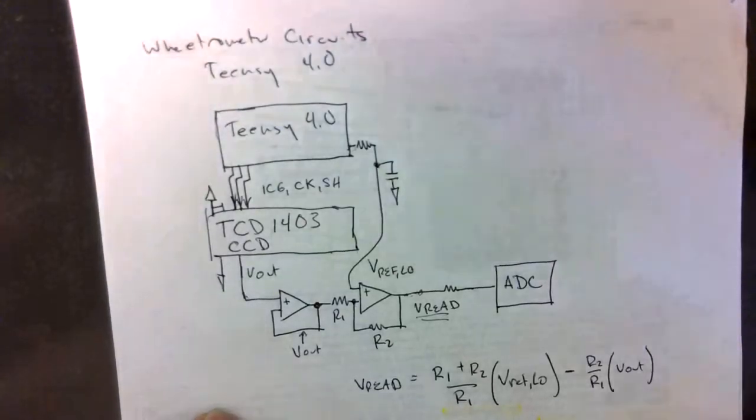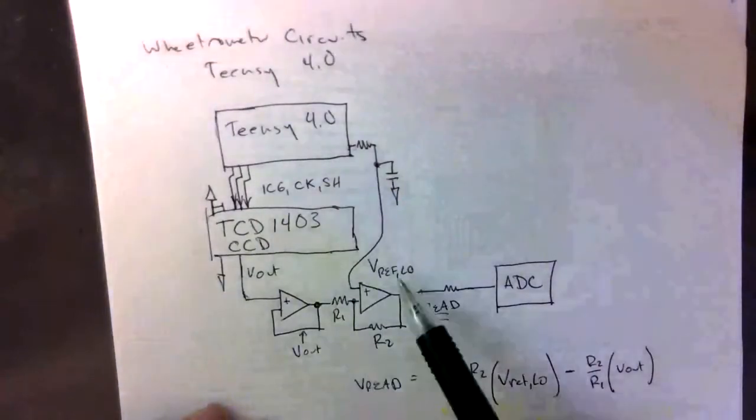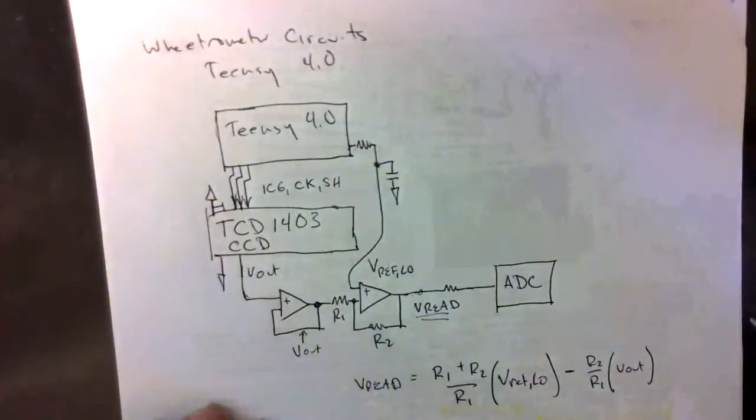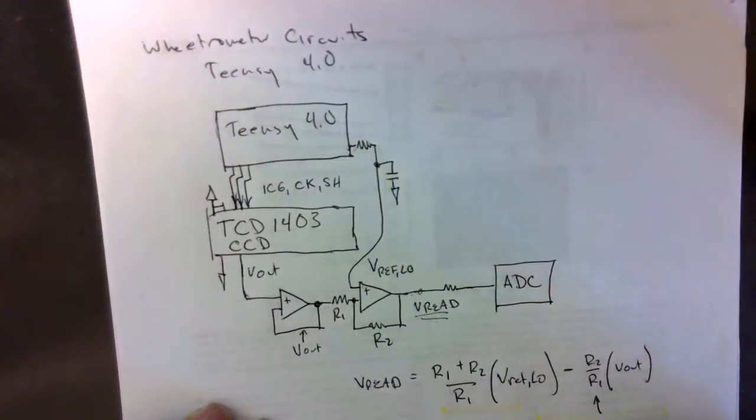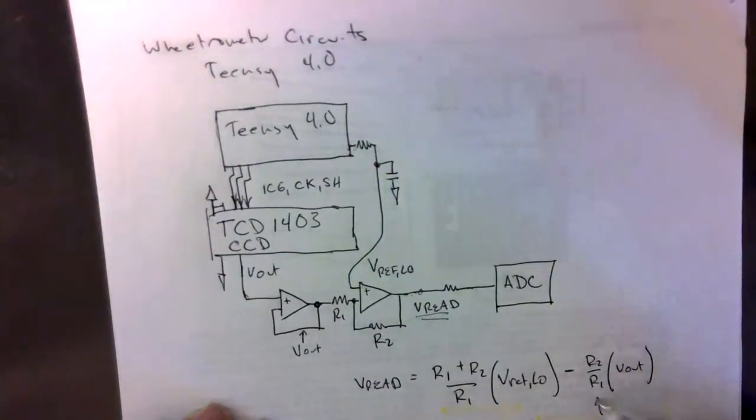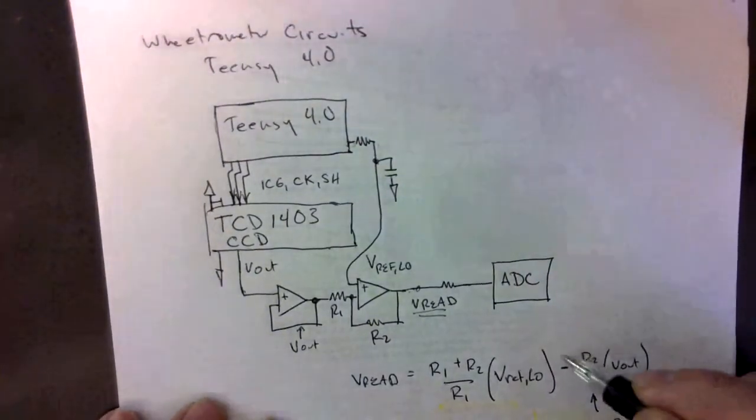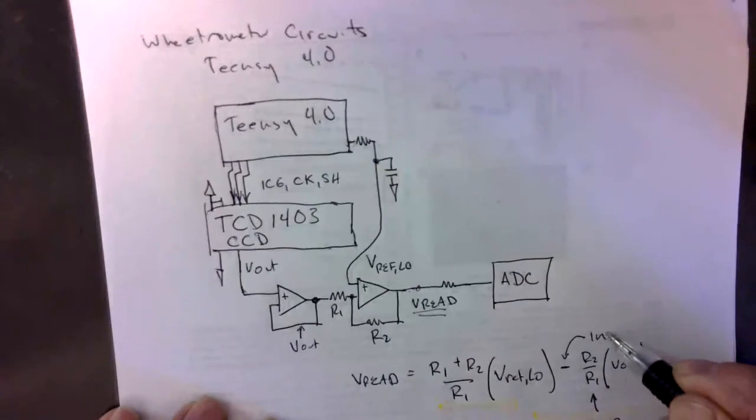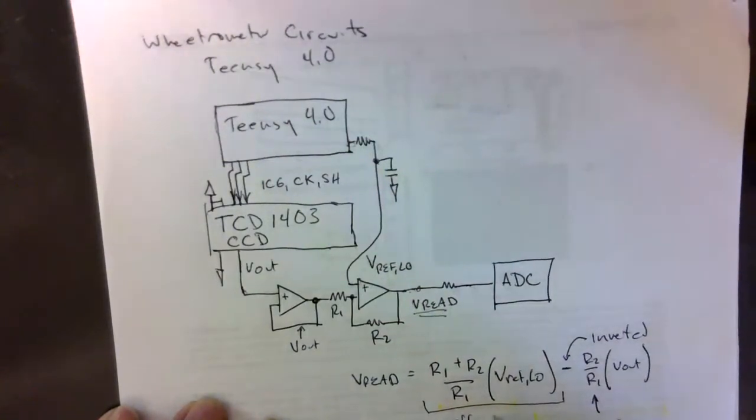That is a result of this feedback loop here. We have, first of all, an amplification constant. So the output is going to be inverted and it's going to be amplified. And then we have this term, which is an offset.